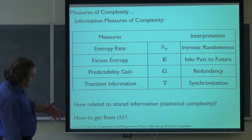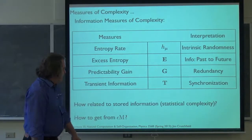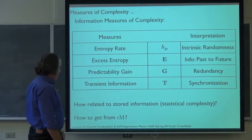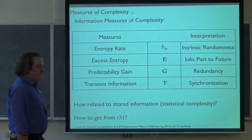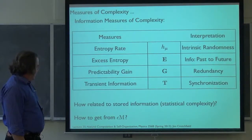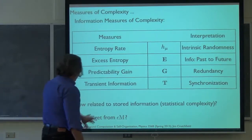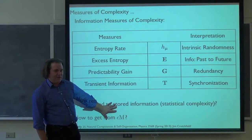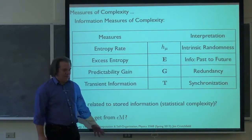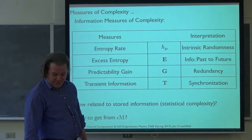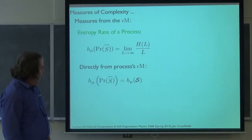Putting the last chord in the context of the last three weeks: how are these related to, for example, the statistical complexity? A practical question is: can we estimate these things if we have the epsilon machine? How can we calculate them? This is going to lead us to some curious observations. But let's start at the top — what's the simplest unifying theme: how random a process is.